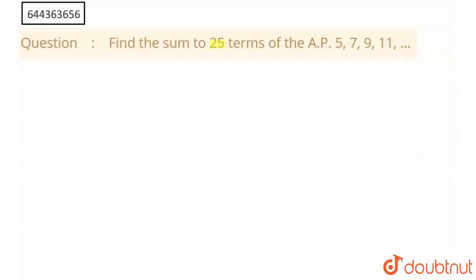find the sum of the 25 terms of the AP which are 5, 7, 9, 11. So in this